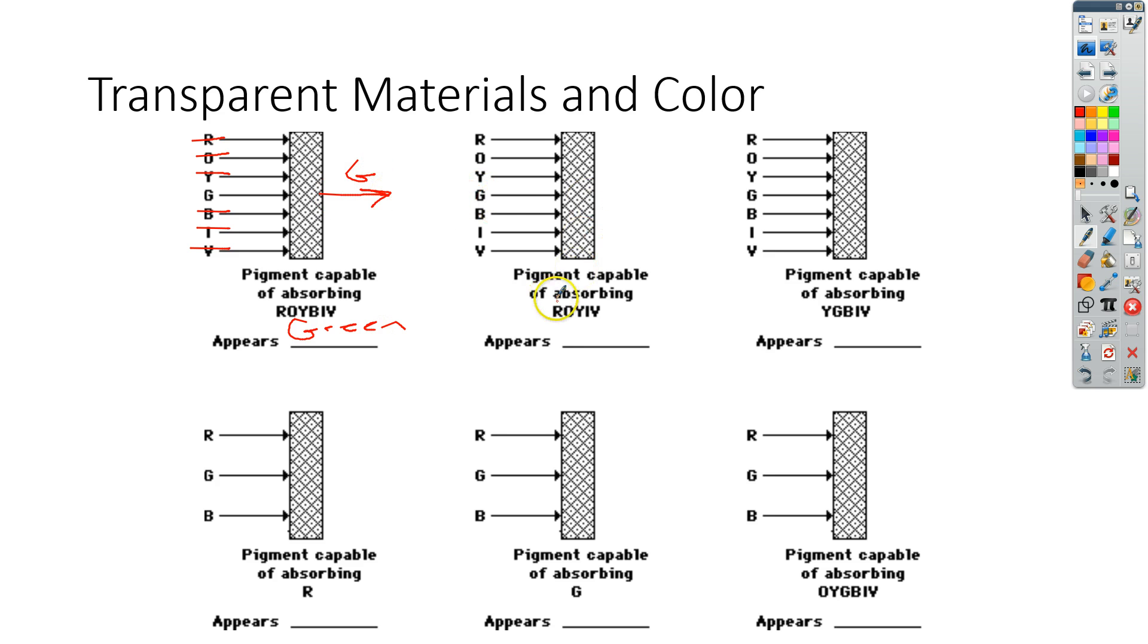So for the next one, the pigment capable of absorbing ROY IV. So this right here will absorb ROY. It'll also absorb I and V. So now we get both green and blue. So both of those colors are allowed to come out. And so this one appears greenish blue is what you would see.